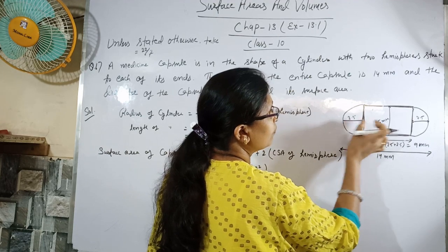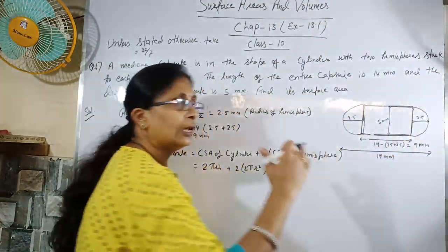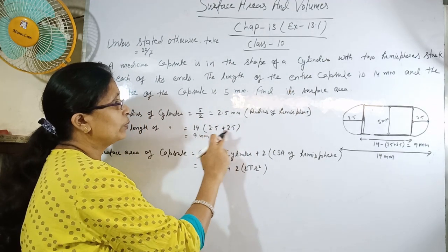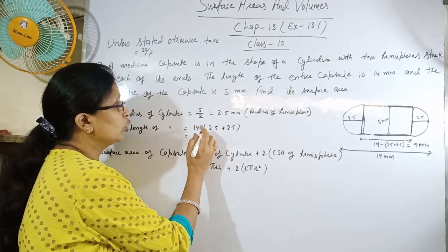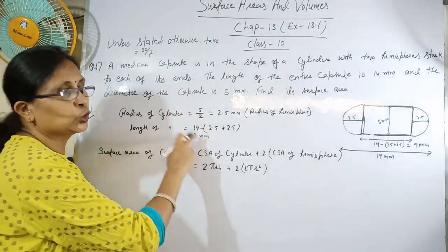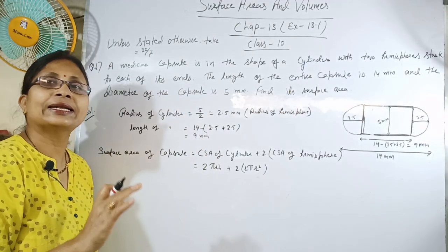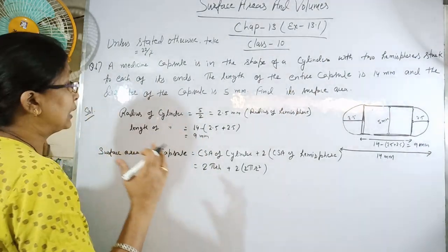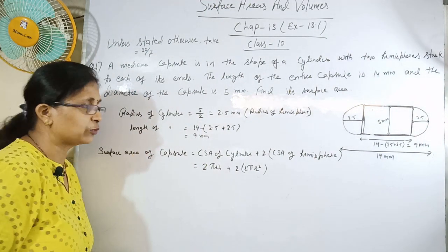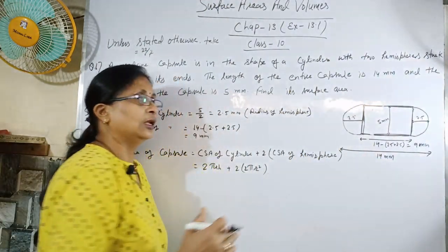तो 2.5 plus 2.5 को full length 14 से minus करना है। जब minus किया तो cylinder का height = 14 - 2.5 - 2.5 = 9 mm आ गया। अब हमें capsule की surface area find करनी है।